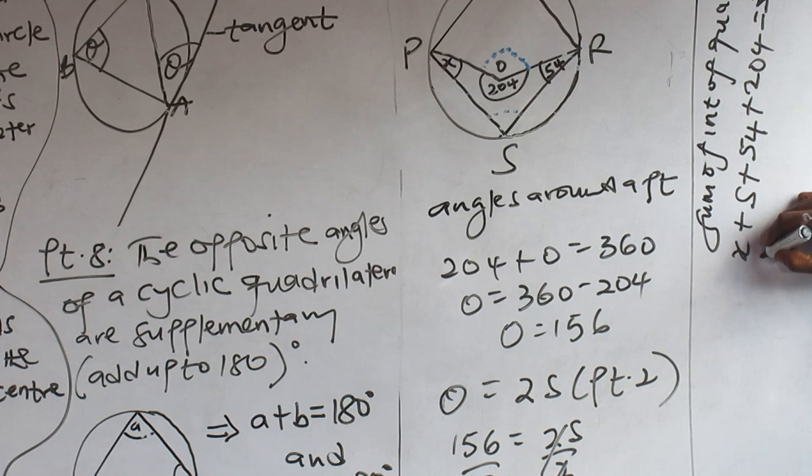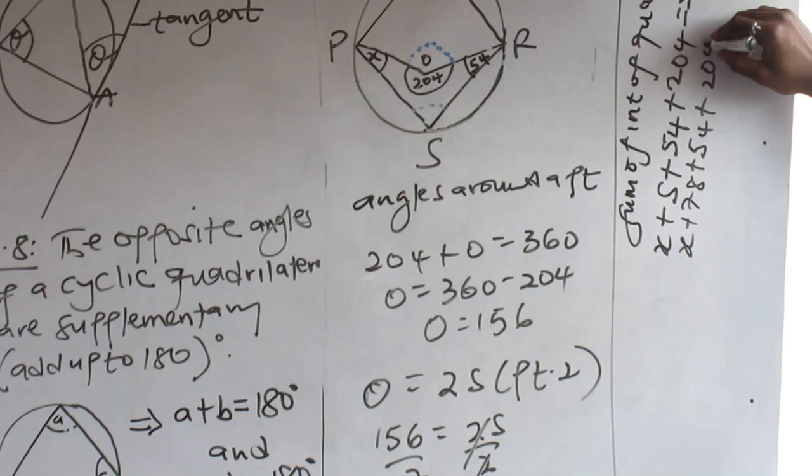Compute. X plus 78 plus 54 plus 204 equals what? 360. Yes.